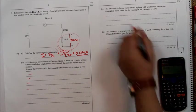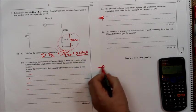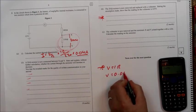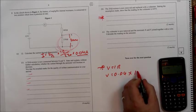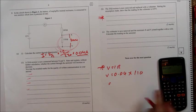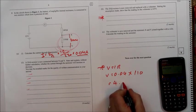I'll use V as IR, so this question, I'm just going to do it here. V equals IR, so V equals 0.04 times 110, which equals 4.8 volts.